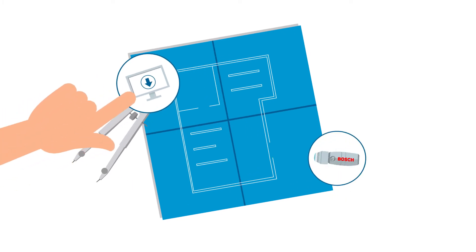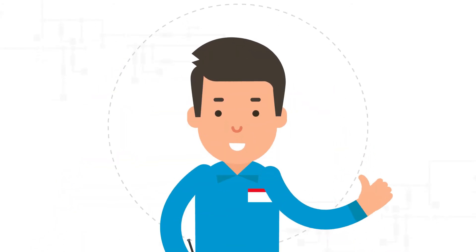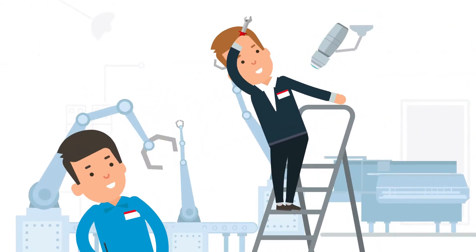Supported by a planning tool from Bosch, Paul uses the findings to draw up an individual resource plan for the building. This convinces Tom and installation can go ahead.